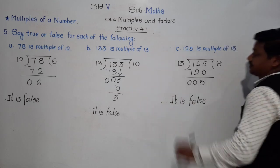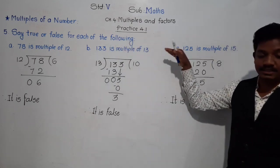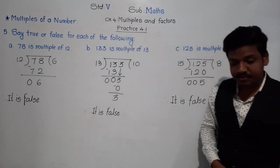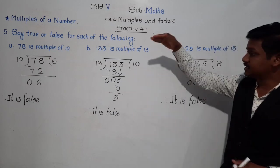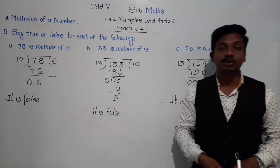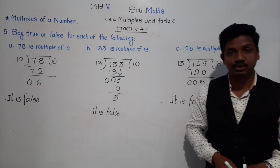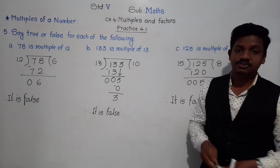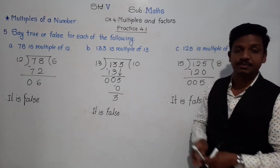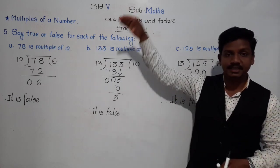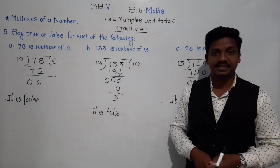So A, B, and C are all false. In question 5, there are three more examples which you have to solve by yourself. This much for today. If you have any problem regarding this, you can ask. Thank you and have a nice day.